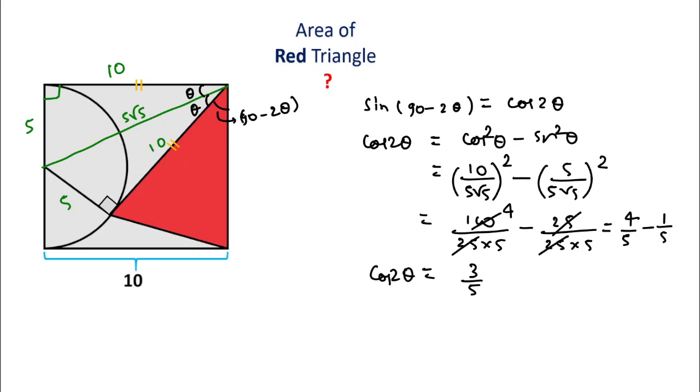Now, the area of the red triangle equals 1/2 times the product of these two sides. This length is also 10, so it's 1/2 × 10 × 10 × sin(angle), where the angle is...